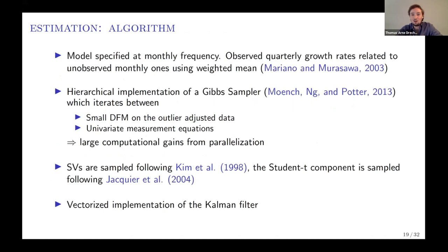We have done a lot of work on improving the efficiency of the algorithm. In our Gibbs sampling algorithm, some steps are multivariate and some are univariate—for example, the estimation of individual measurement equations of the observables. By separating out those univariate steps, you can use parallelization and gain a lot of efficiency through cloud computing. We also implement a vectorized version of the Kalman filter. The bottom line is that we have greatly improved the speed of the algorithm.